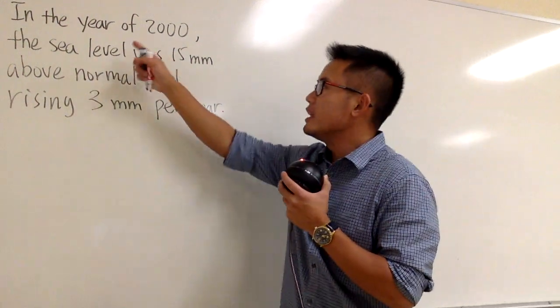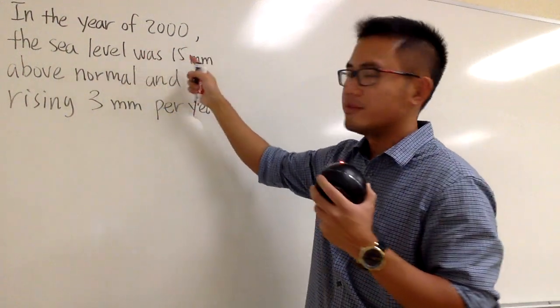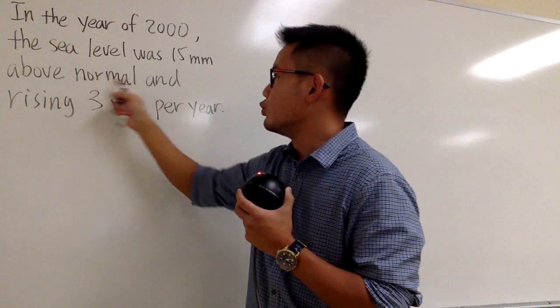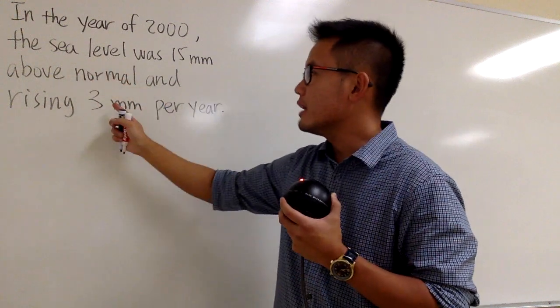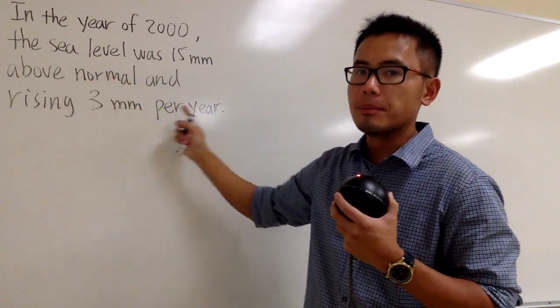Okay, right here we have in the year of 2000, the sea level was 15 millimeters above the normal, and it's rising at a rate of 3 millimeters per year.